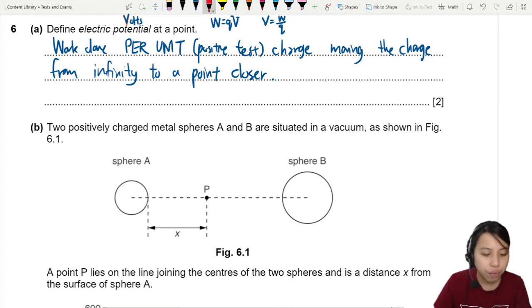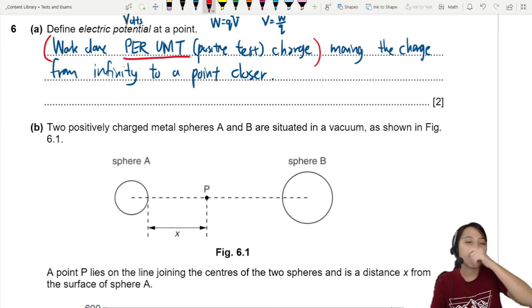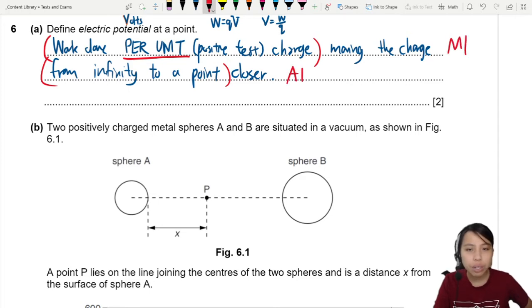So the marks here: first one, work done per unit charge. Per unit is sometimes very picky, they must see that per unit charge. Moving from infinity to a point, that's the second one. These two come as M1 and A1 pairs, so if you didn't get the M1, then your A1 also cannot.